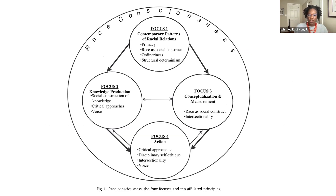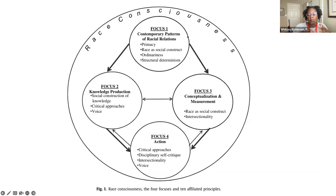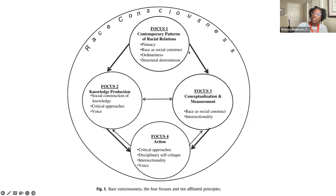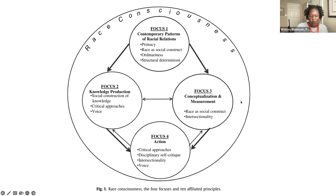One key tenet of the Public Health Critical Race Praxis is the idea that there is structural racism — all these ways in which society fosters discrimination via mutually reinforcing inequitable systems that span many domains. It's ordinary and common. If you believe this, when you see all these coincidences of machine learning performing badly in certain populations, you have a different lens. Maybe there are common problems with common solutions, and this is not just a series of coincidences. Ford and colleagues also talk about knowledge production, how we come up with ideas, who are the people doing the research, conceptualization and measurement, and moving to action.